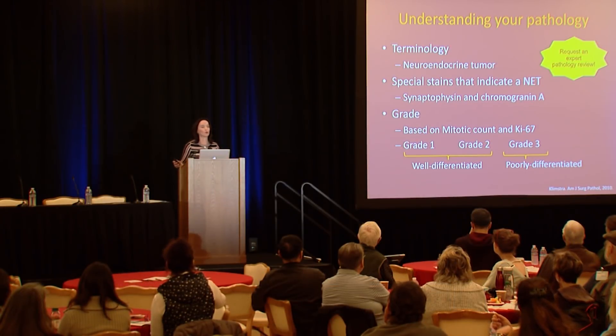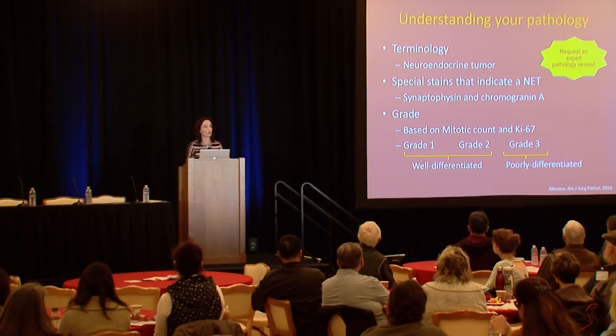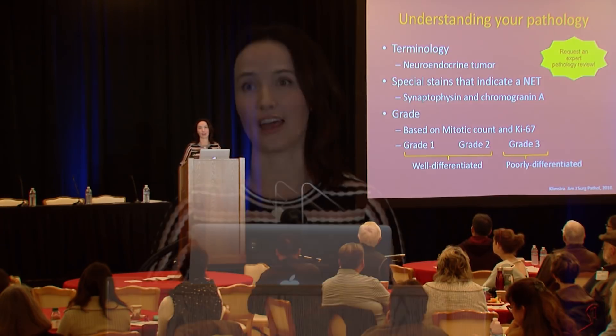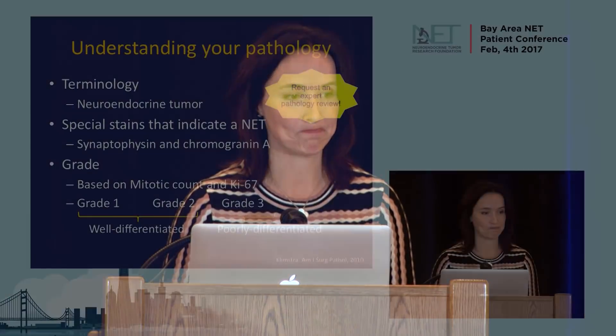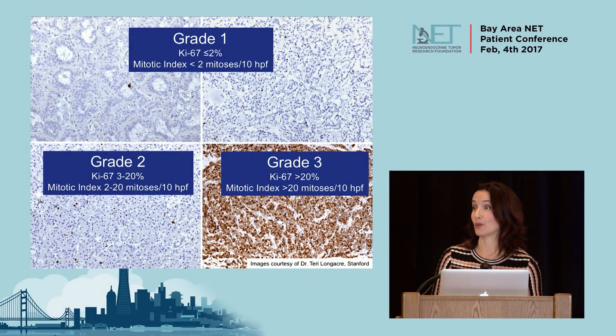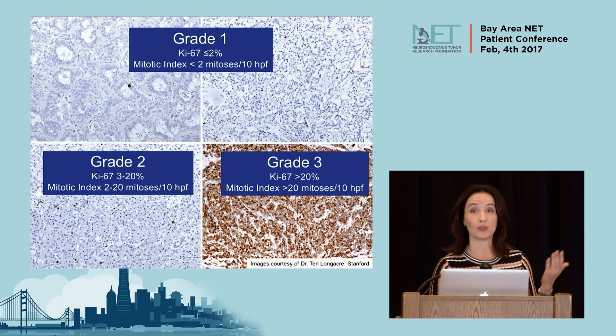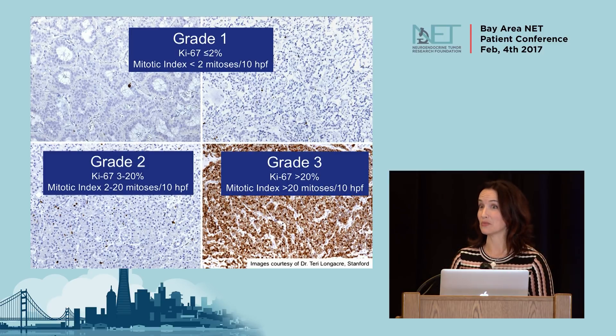As part of a second opinion, we encourage a second opinion pathology review — expertise is required for reviewing pathology, and that is a key take-home. This is just an example of what pathologists look at under the microscope. It may look like an abstract picture to many of you, but the pathologist can tell the difference between grade one, grade two, and grade three based on these special stains.